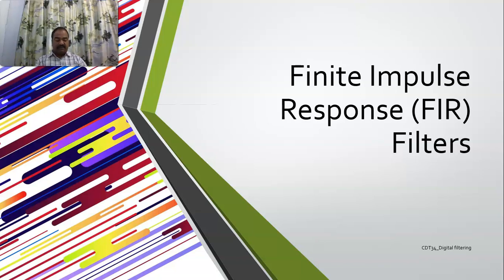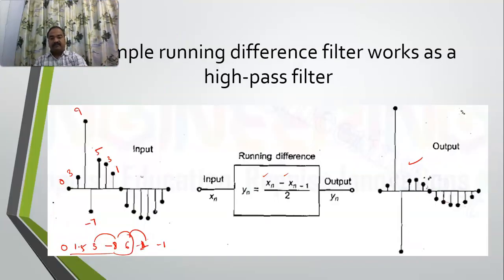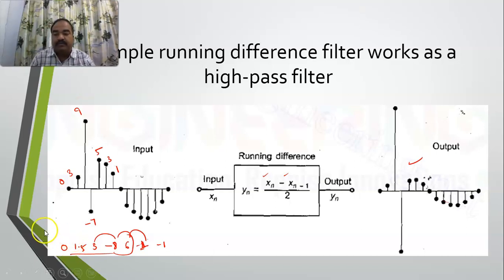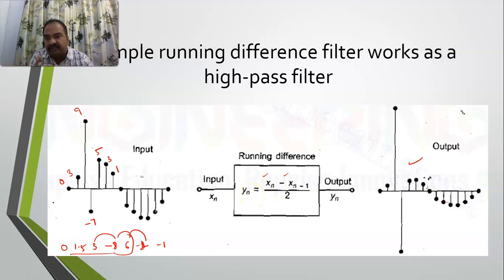These are simple low-pass and high-pass filters. All you need to do is write proper code by selecting proper coefficients. You already have sampled data, and you need to write code in some programming language so that harmonics are eliminated based on your requirements.